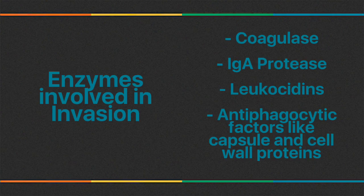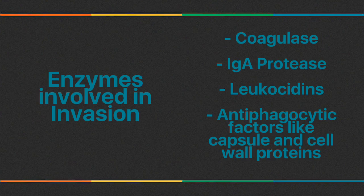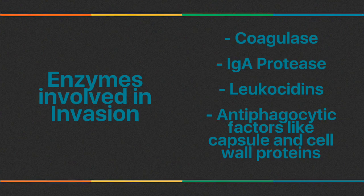Anti-phagocytic factors include the capsule, which is external to the cell wall and prevents phagocytes from adhering to bacteria. Anti-capsular antibodies allow more effective phagocytosis — a process called opsonization. Cell wall proteins of gram-positive cocci also play a role: the M protein of Group A Strep is anti-phagocytic, and Protein A of Staph aureus binds IgG and prevents complement activation.